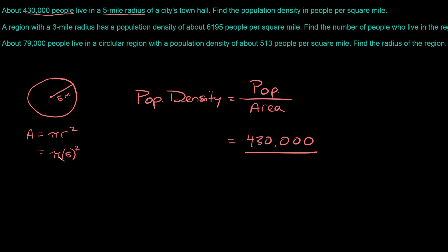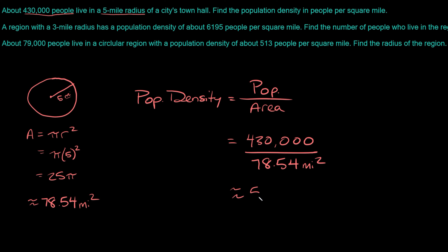Five squared is 25, so the area is 25 pi, which is approximately 78.54 square miles. That's what we plug in for the area. So dividing 430,000 by 78.54 gives us the population density, which is approximately 5,475. The units for population density are people per square mile.